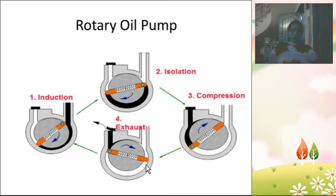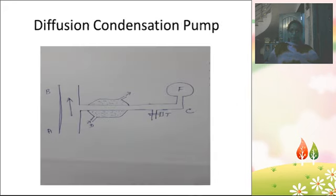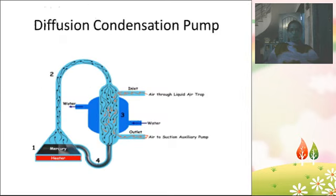To produce still lower pressure, rotary oil pump is used in conjunction with the mercury diffusion pump. Next we will see about the mercury diffusion pump, also called the diffusion condensation pump.